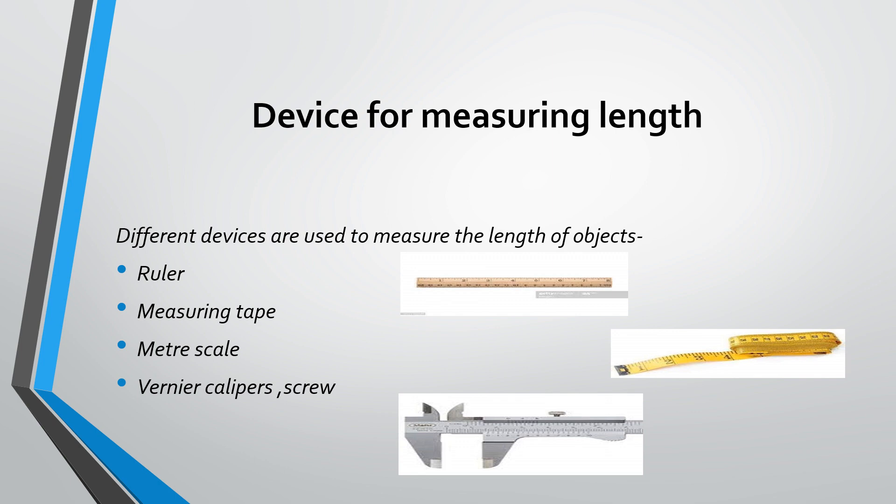And next is vernier caliper or screw gauge. They are used to measure very small lengths which are less than 1 millimeter with accuracy. Those objects which are less than 1 millimeter are measured using the vernier caliper.